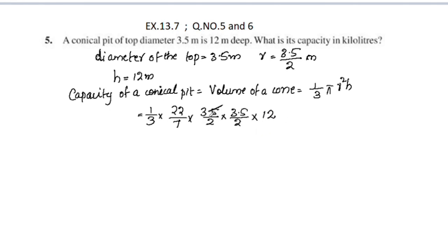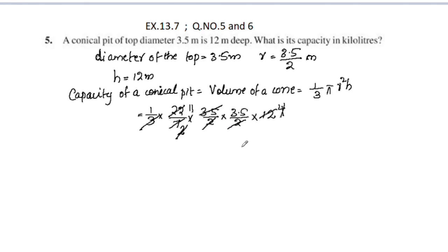3.5 by 2 is equal to 7 by 4. Then 3 into 12 is 12, 2 into 22 is 11, and 11 is equal to 3.5, giving us 38.5.